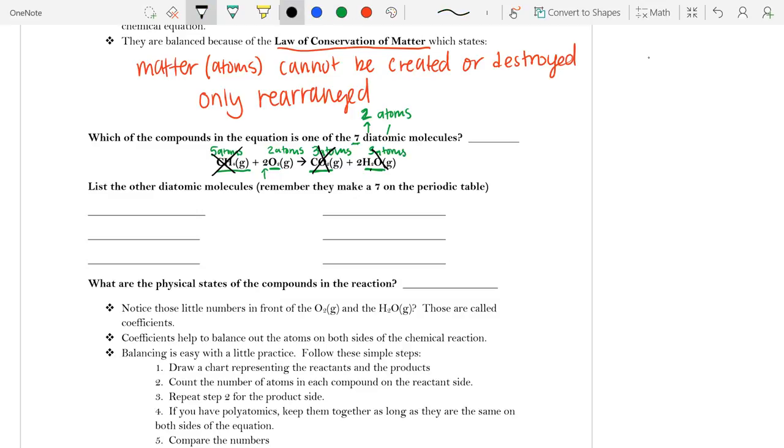So that must mean that oxygen, or O2, is our diatomic molecule, excuse me. Now, remember that these diatomic molecules, they're just elements on the periodic table that always operate in pairs when found in nature.